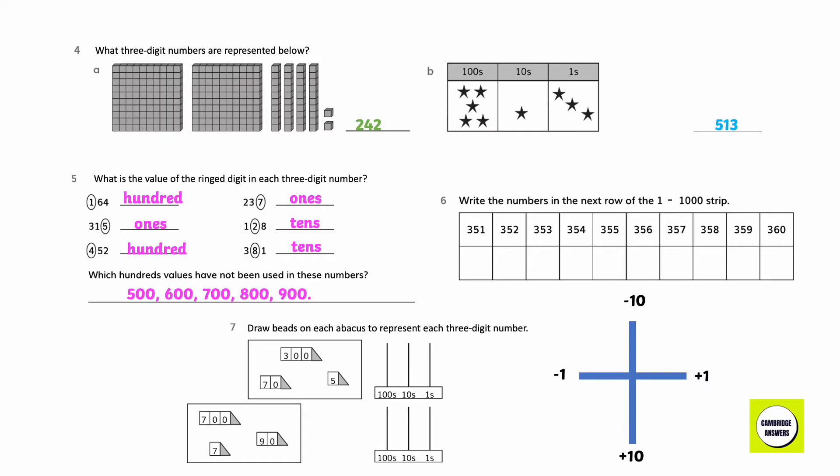Write the numbers in the next row of the 1 to 1000 strip. 361, 362, 363, 364, 365, 366, 367, 368, 369, and 370.